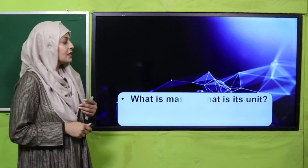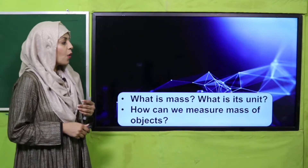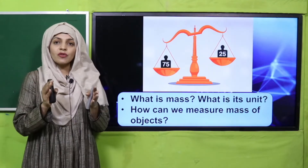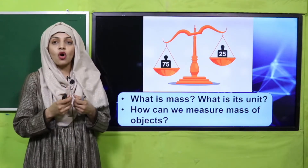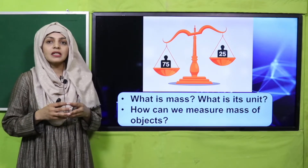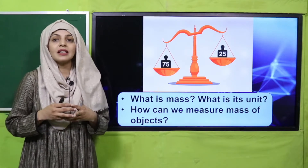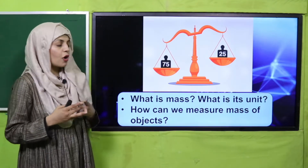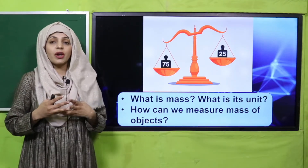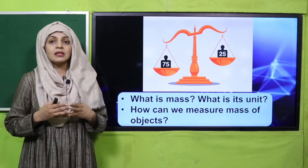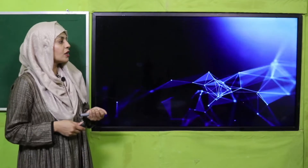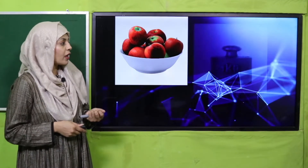Before that, let's quickly recap what we did in the previous lecture. What is mass and what is its unit? The amount of matter inside an object is called mass, and its unit is grams or kilograms. We can measure mass of objects through a physical balance, digital balance, or electric balance.